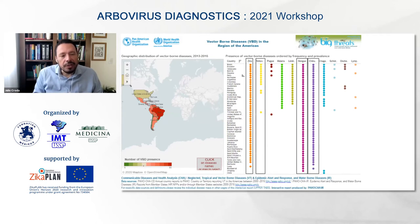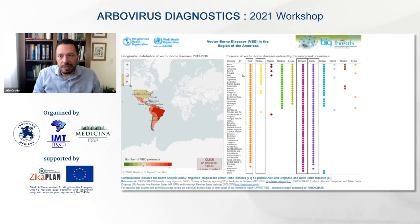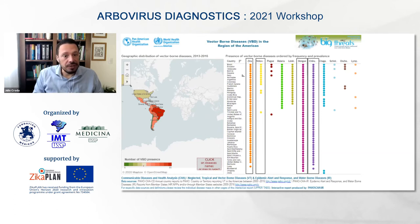Arboviruses are widely distributed in Latin America. The three main urban arboviroses and four most important arboviroses in this region are dengue, which has a huge impact, chikungunya, Zika, and yellow fever. You can see the distribution of these diseases across countries in the region, with Brazil contributing the large majority of arbovirus cases.